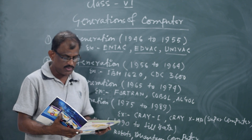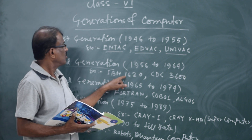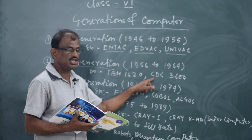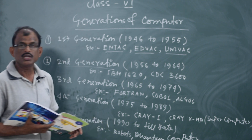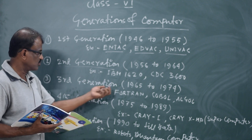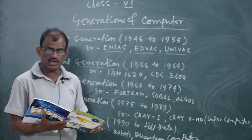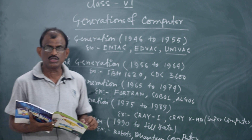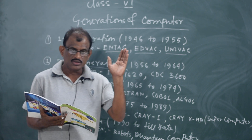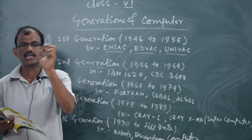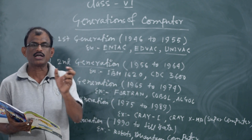The second generation computers include IBM 1620 and CDC 3600. The third generation computer was from 1965 to 1974. The third generation computer introduced IC — Integrated Circuit. The transistor was used in the first and second generation.